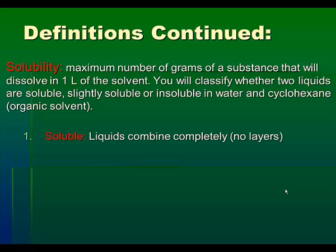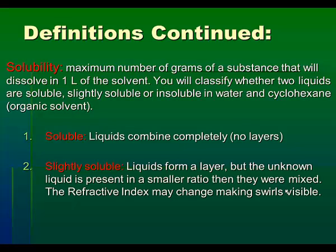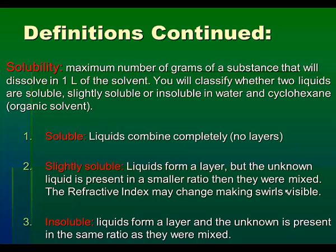Soluble unknowns will be liquids that combine completely — there will be no layers between the solvent and the solute. Slightly soluble is more difficult to determine. If your unknown is slightly soluble and you add it to your solvent, the liquid will form a layer, but the unknown will be present in a smaller ratio than originally mixed. So if you add a milliliter of your unknown and it is slightly soluble, you will get a layer but less than a full milliliter will remain. You can also see a slight change in the refractive index, which may appear as swirls, such as adding dishwashing liquid to water. Insoluble liquids are easy to tell — the insoluble unknown will form a clear defined layer and the unknown will be present in the same ratio as originally mixed.